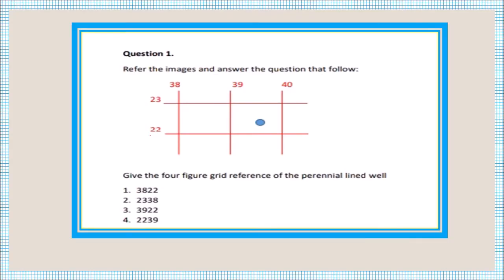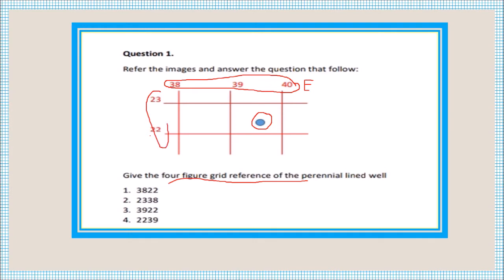The first question: give the four-figure grid reference of the perennial lined well. You can see the symbol of the perennial lined well here. When we say the four-figure grid reference, we take the first two numbers of the eastings, then the northings number. The perennial lined well falls under easting 39 and northing 22, so the answer for the four-figure grid reference is 3922.